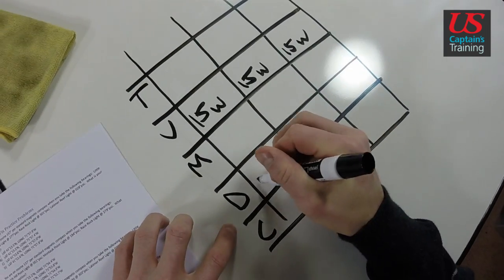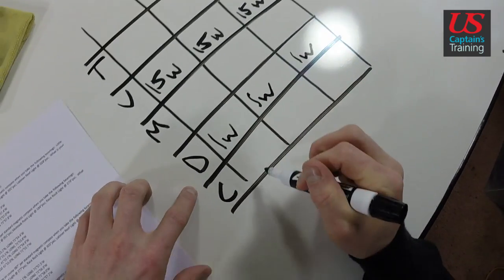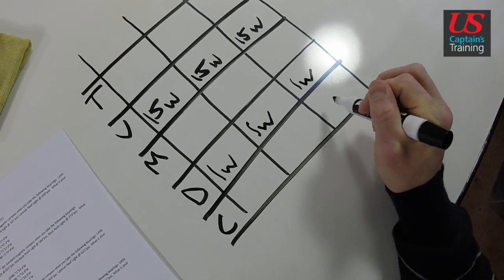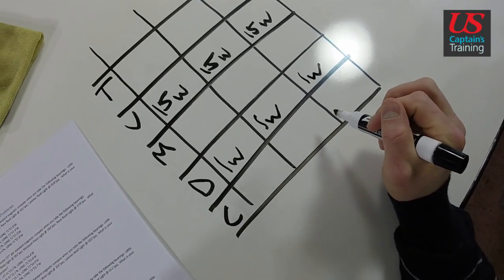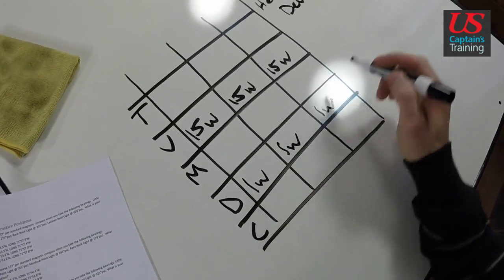We use the same deviation for all of these bearings because we took these three bearings while on a heading of 157. This is the most common mistake people make: they use the deviation and base it on these bearings that we will fill in. That's not correct. Deviation's based on heading.